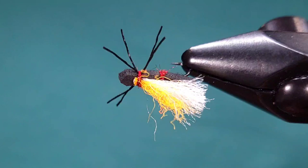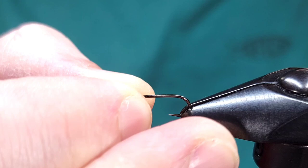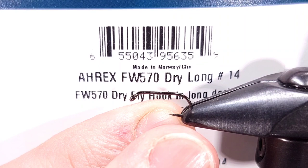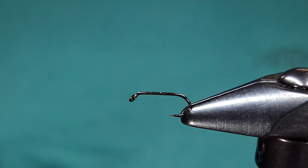Today I'm going to be tying up a mini or micro chubby. This is a miniature version of the traditional chubby Chernobyl. For this specific one I'm using an Ahrex Freshwater 570 in size 14. Obviously tie the size that you'd like.